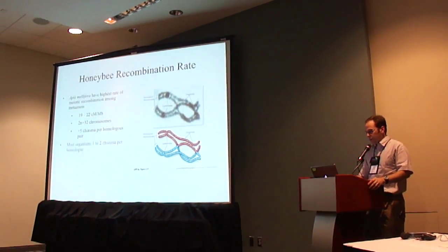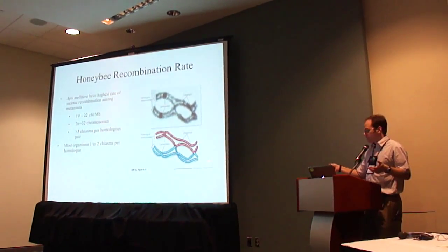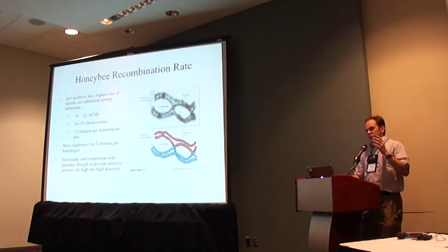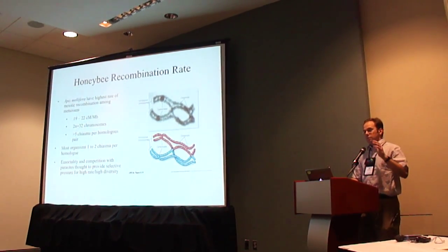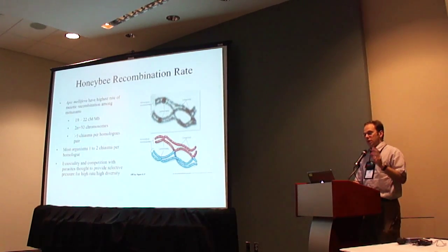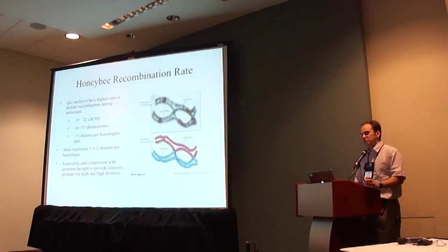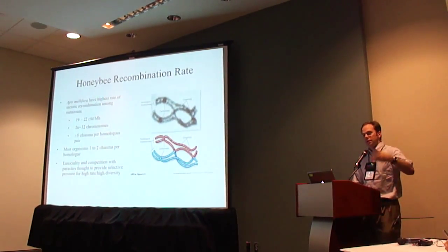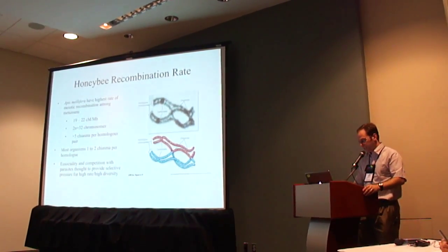In comparison, most other organisms experience one or two chiasma per homologous pair. It is thought that eusociality and competition with parasites provide an evolutionary selective pressure to push honeybees towards this high recombination rate, in what is known as the red queen hypothesis, where they have to change very fast in order to stay within their biological niche.